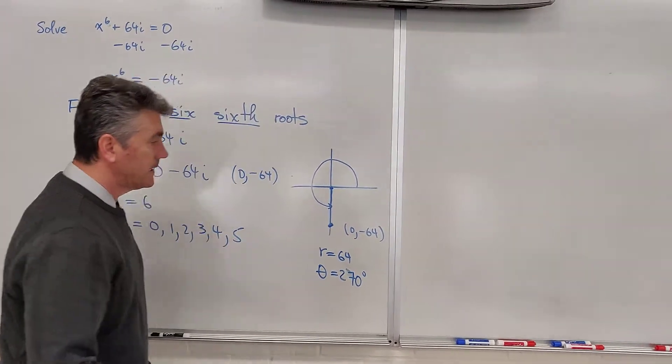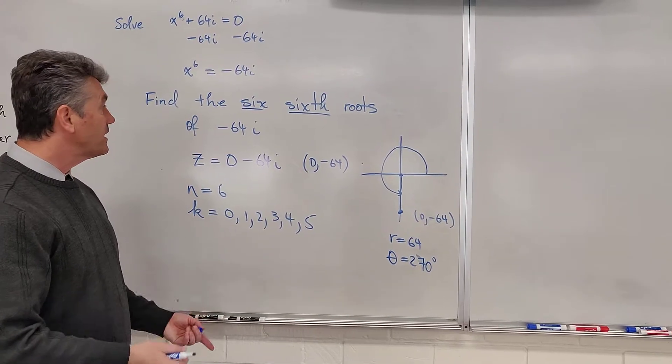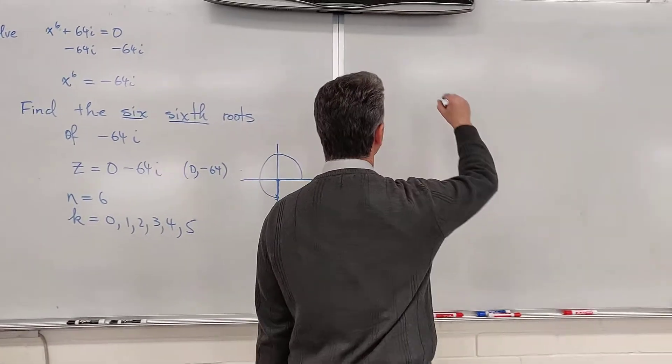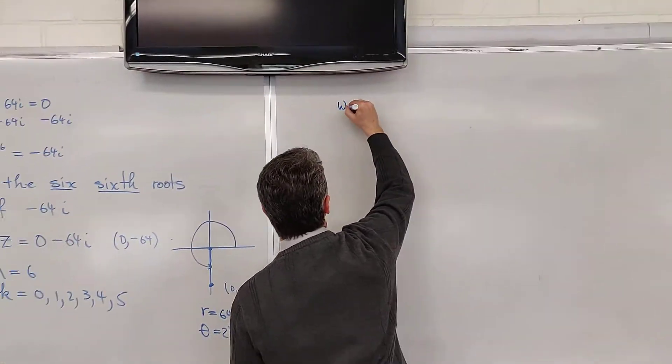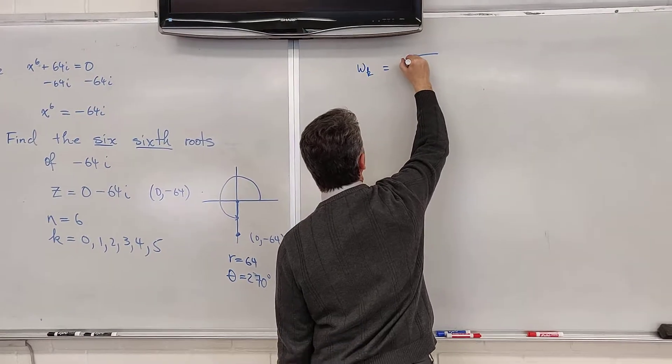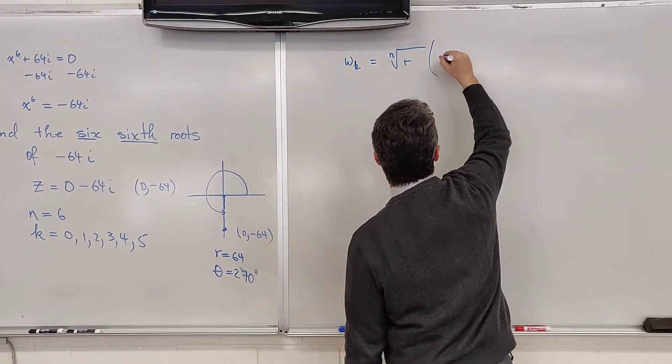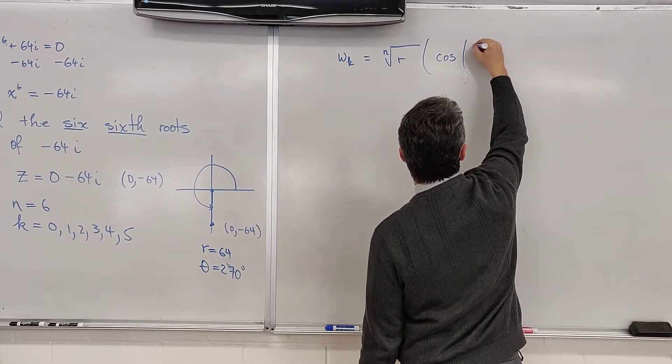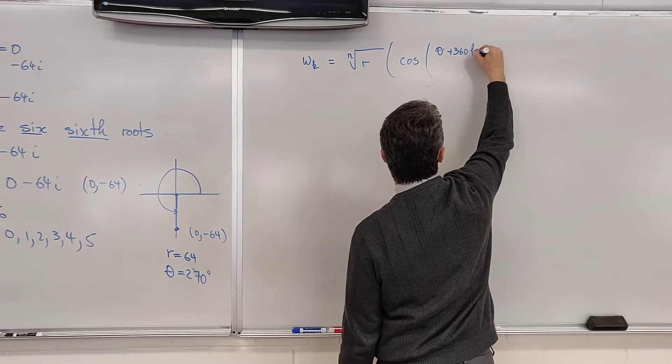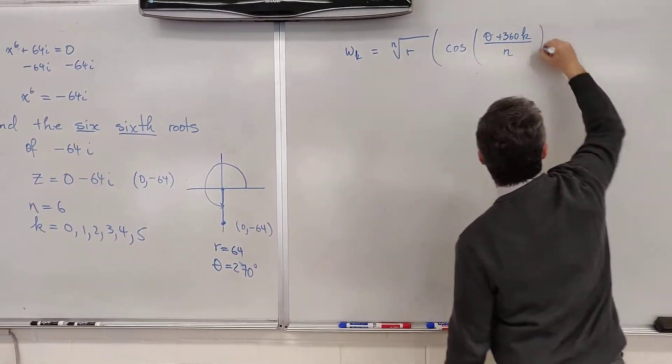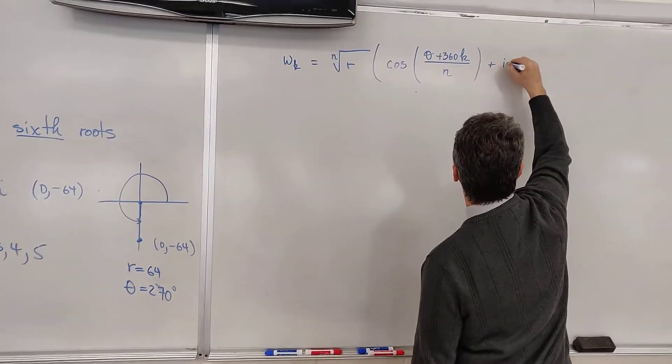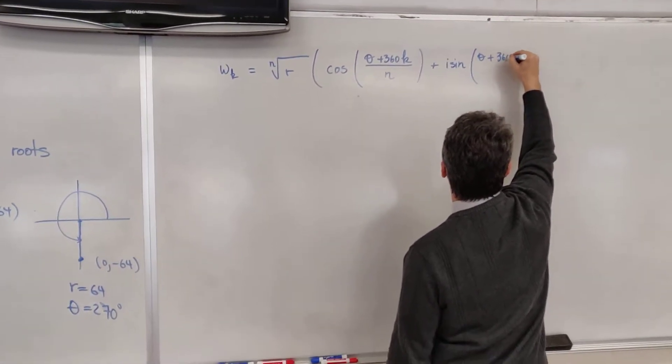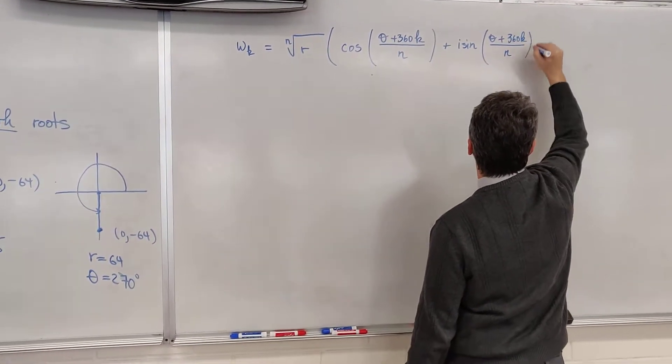Do we have everything we need? Yes. We have r. We have theta. We have n. And we have k. We write the formula. w sub k is equal to the nth root of r times cosine of theta plus 360k divided by n plus i sine of theta plus 360k divided by n.